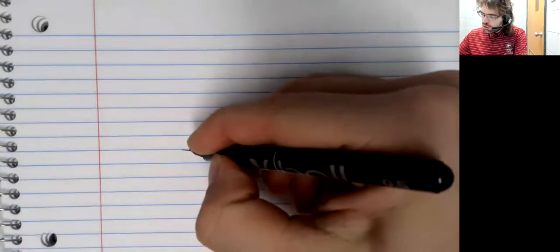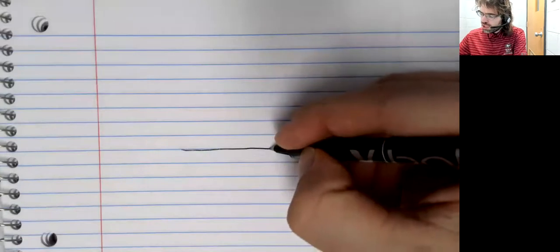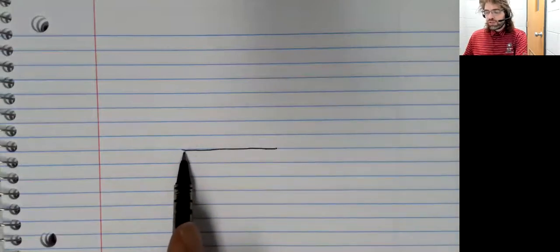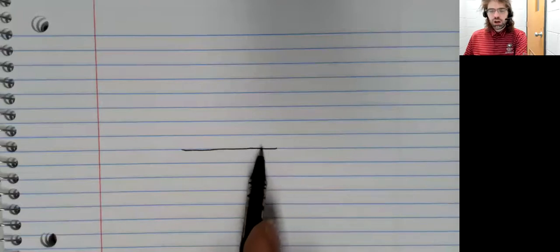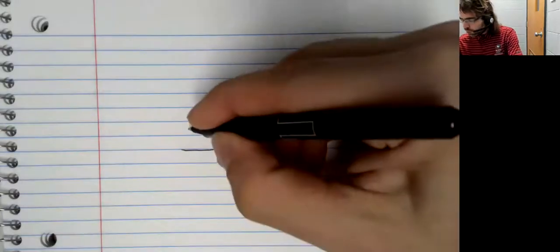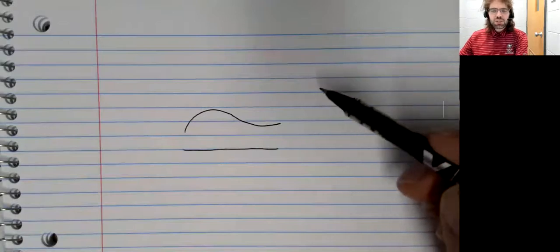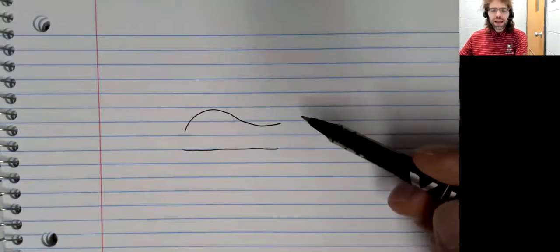So let's start by stating a goal. Suppose we have a function, and this function is defined maybe on the entire real number line, but we only know what the function is on some interval. So on this interval, we know what the function is. It's defined out here, but we don't know how.